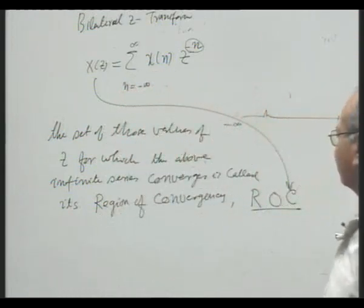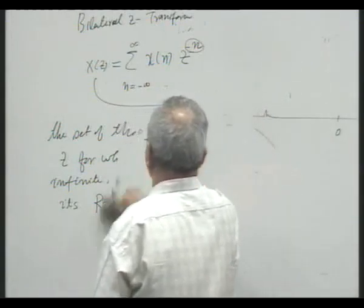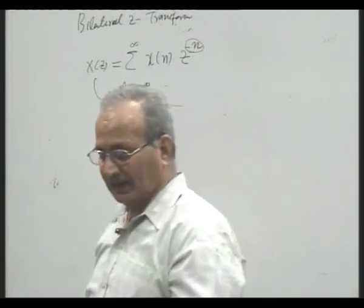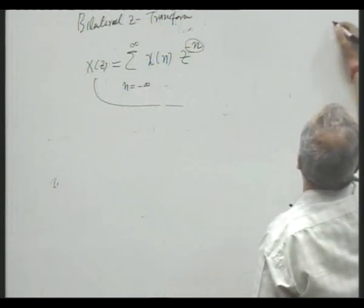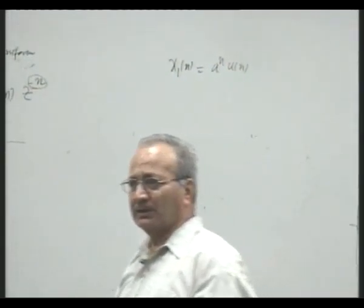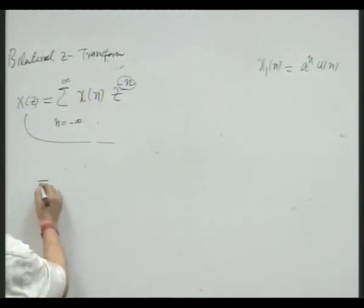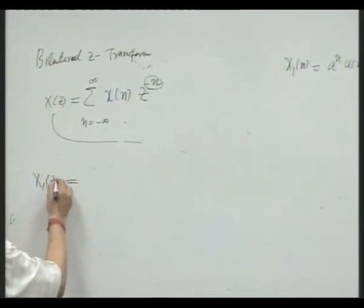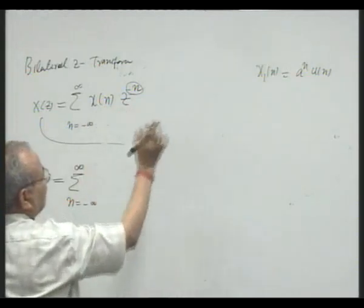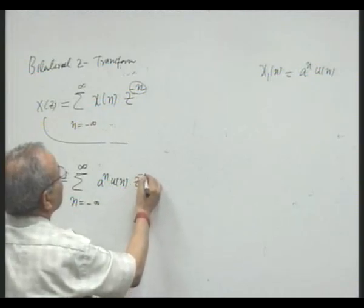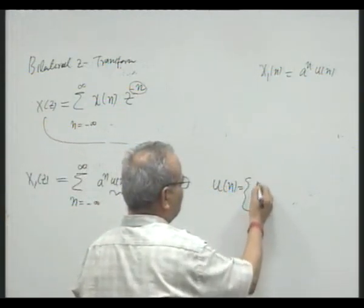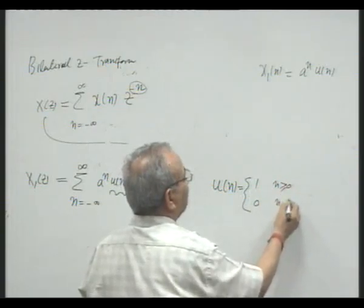So when finding the Z-transform of a signal, in addition to the expression X(z), you must specify the ROC. To illustrate this point, let us consider a signal x₁[n] = aⁿu[n] and find its two-sided Z-transform X₁(z). This becomes the sum from n equals minus infinity to infinity of aⁿu[n]·z^(−n). Applying the definition of u[n] — which equals 1 for n ≥ 0 and 0 for n < 0 — the summation limit changes to n from 0 to infinity.